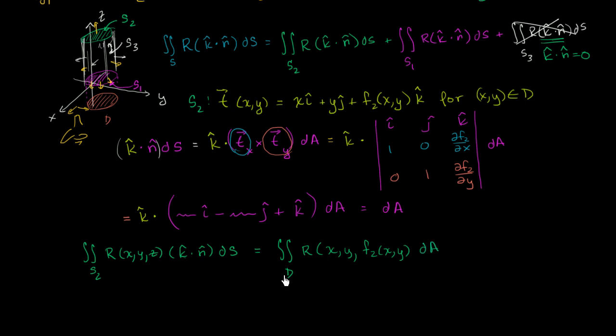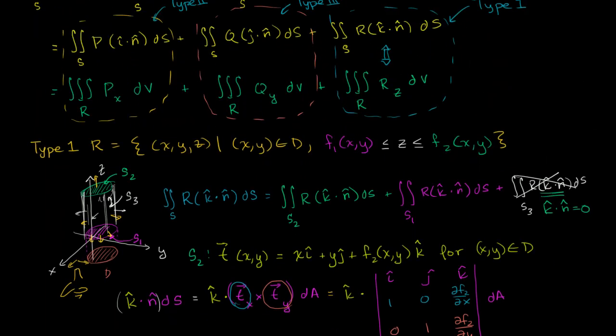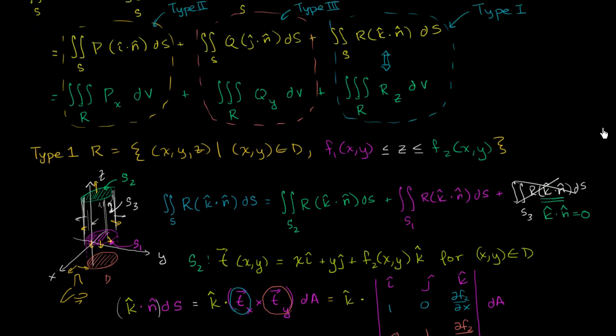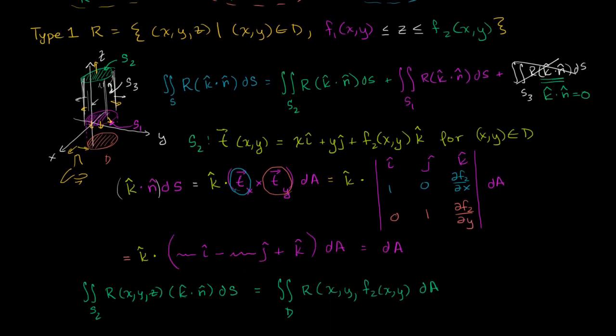So you might be saying, hey Sal, it didn't look like you simplified it a lot. But at least now put it in terms of a double integral. Instead of a surface integral. So at least in my mind, that is a simplification. And in the next video we're going to do the exact same thing with this. Just making sure that our vectors are oriented properly. And we could just introduce a negative sign to make sure that they are. And then we're going to think about the triple integrals. And try to simplify those.